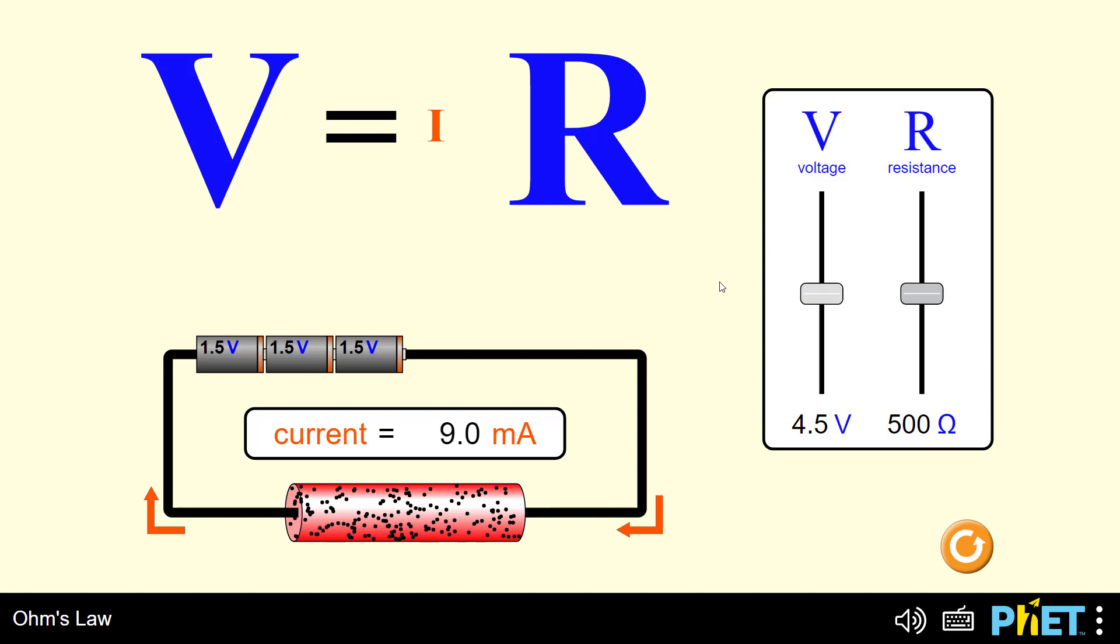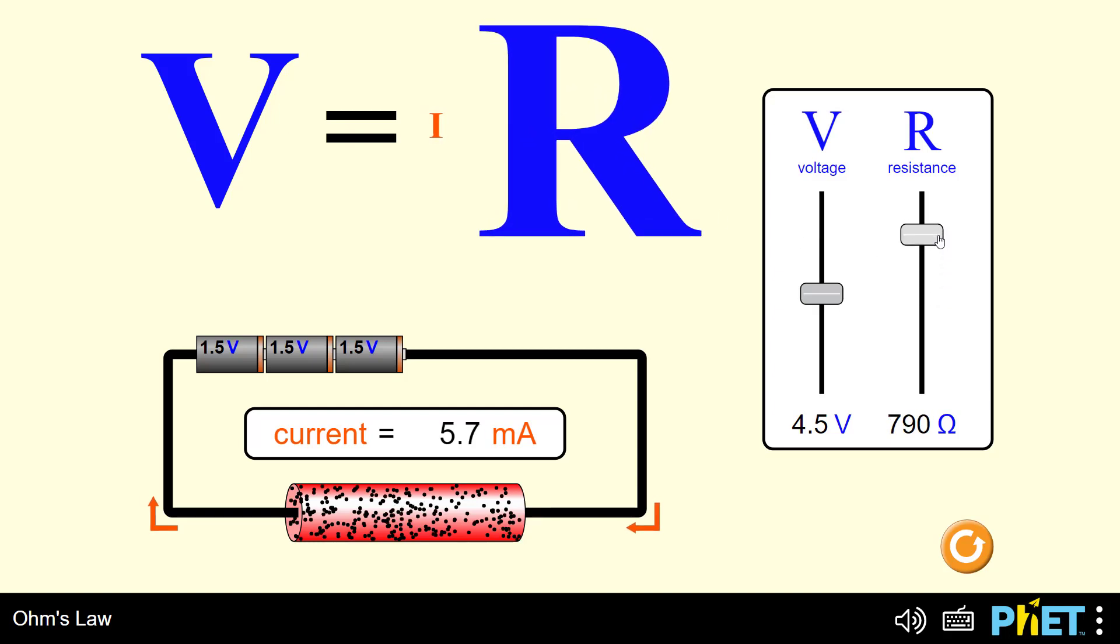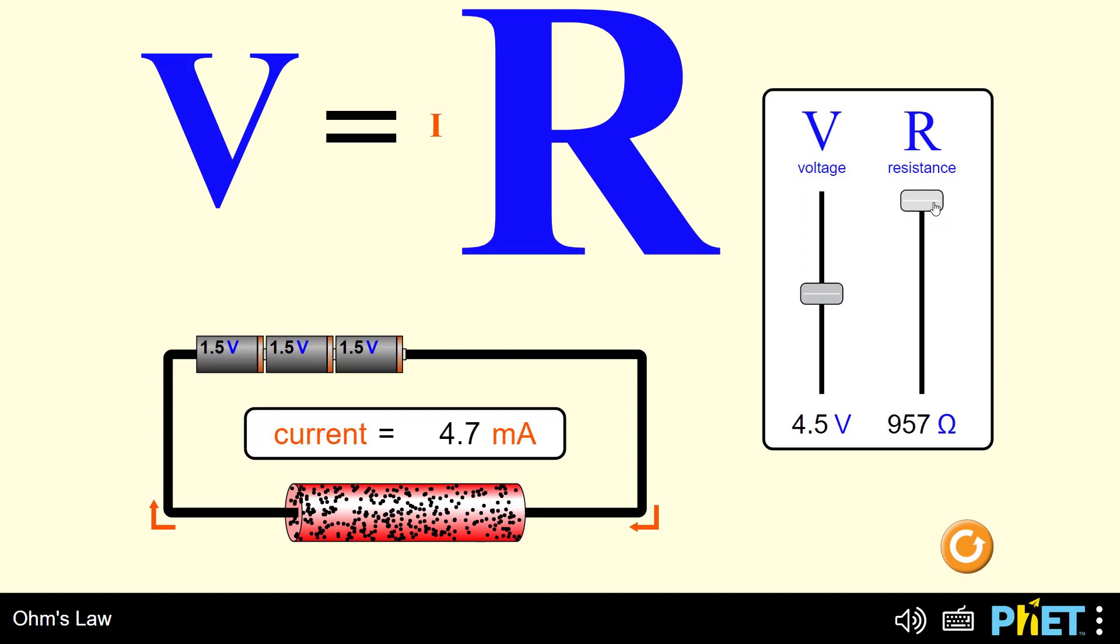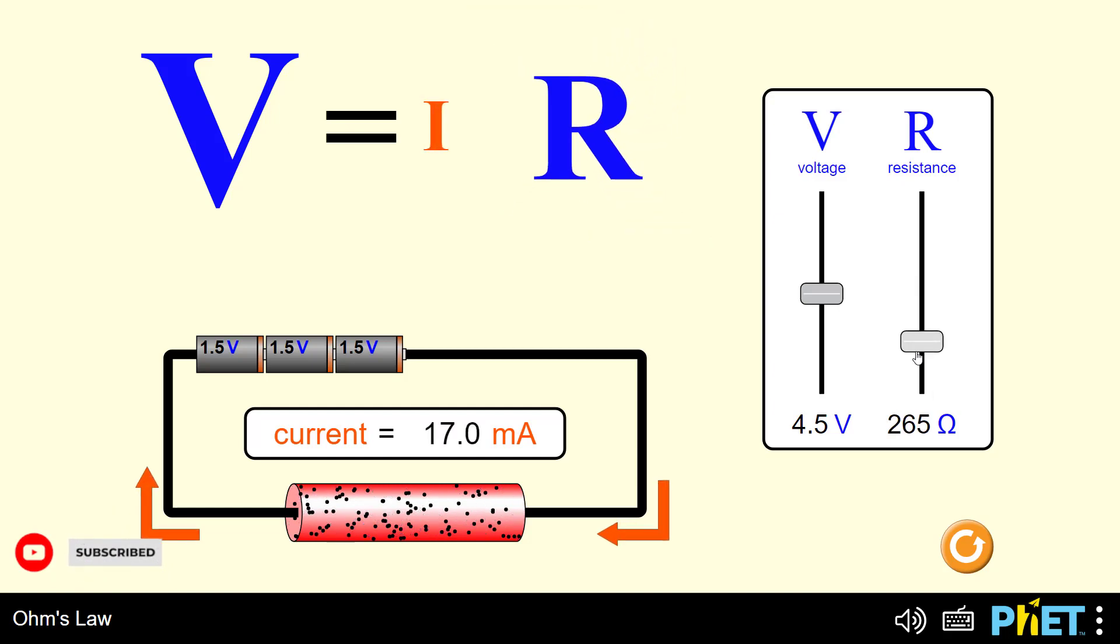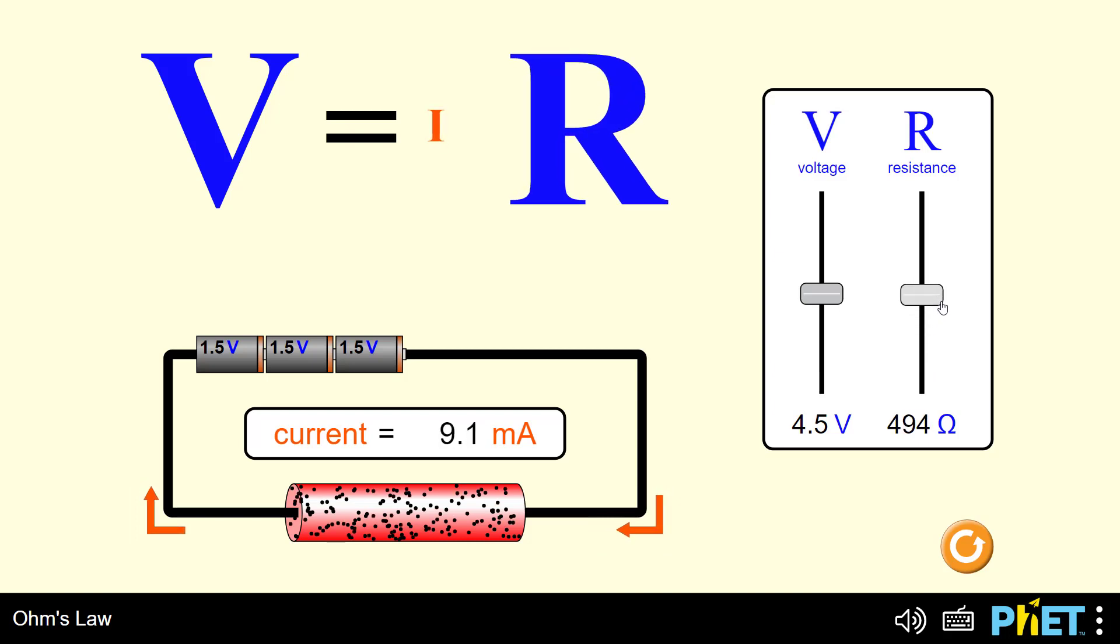Let us see the relationship between current and resistance. If we start increasing the resistance value, the current begins to decrease. But if the resistance decreases, the current begins to increase. In other words, the relationship between current and resistance is an inverse relationship.